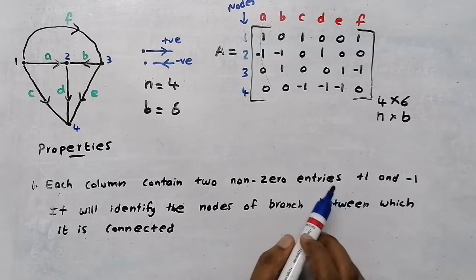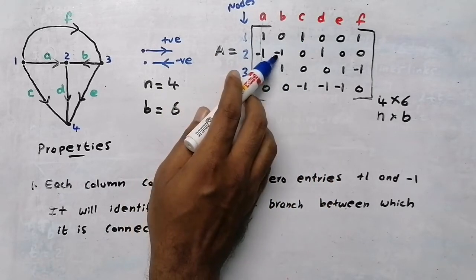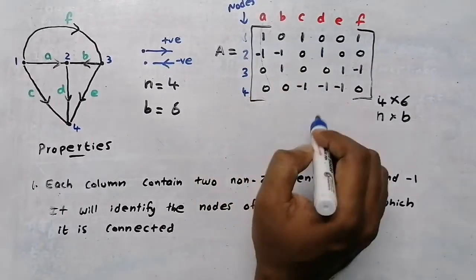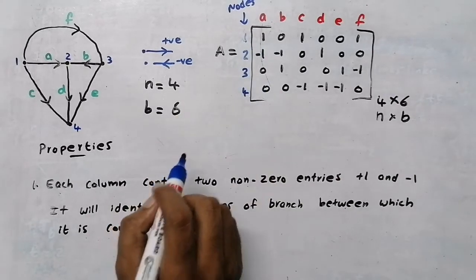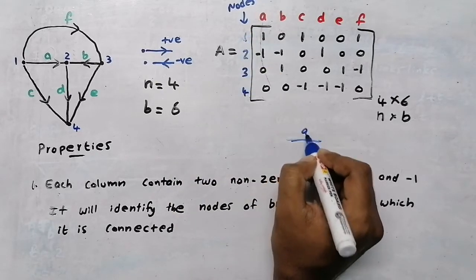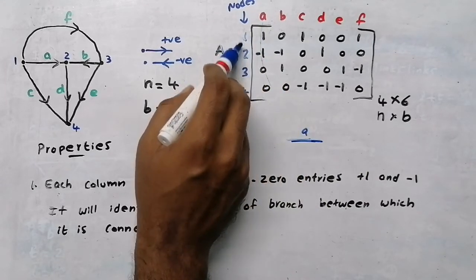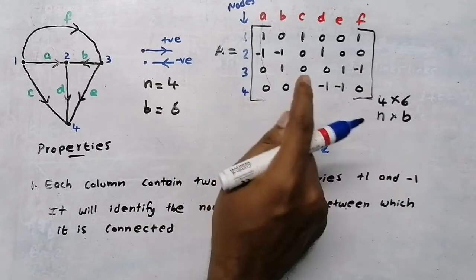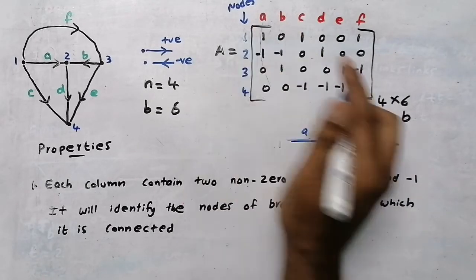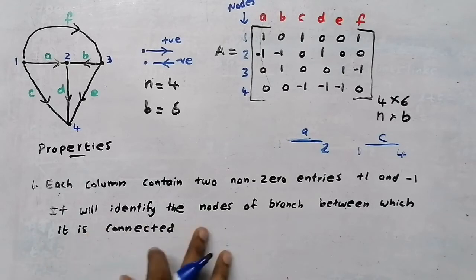Property 1: each column contains exactly two non-zero entries — plus one (+1) and minus one (−1) — and the rest are zeros. You can verify: each column has −1 and +1. The use of this property is that by looking at a column we can identify the two nodes of that branch. For example, branch a has +1 in row 1 and −1 in row 2, so nodes 1 and 2 are the terminal nodes of branch a.